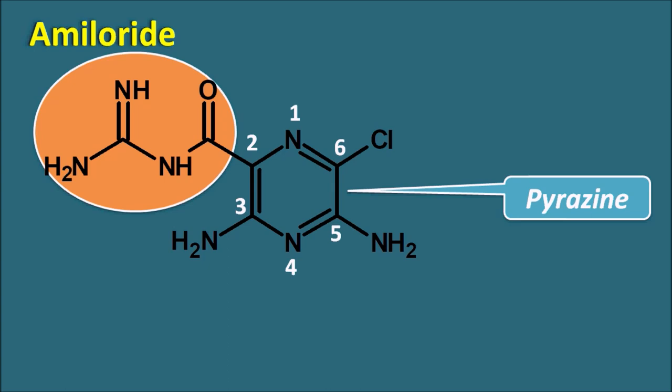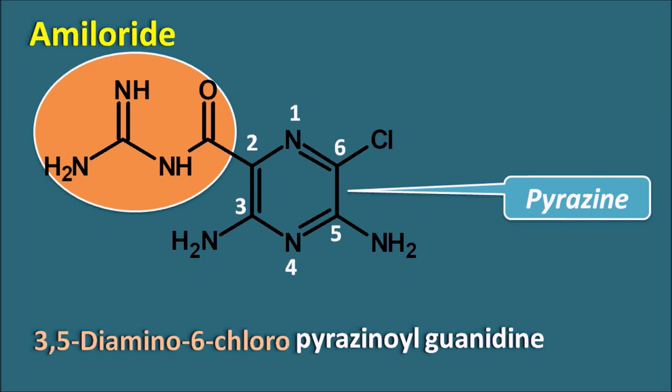Amiloride is a pyrimidine-oyl guanidine having amino groups at the third and fifth positions, and a chlorine group at the sixth position. So the name of amiloride is 3,5-diamino-6-chloro-pyrimidine-oyl guanidine. Amiloride is one potassium-sparing diuretic having the pyrimidine structure.